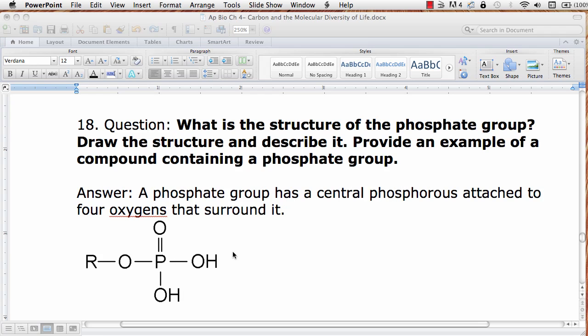What is the structure of the phosphate group? It has a central phosphorus that is attached to four oxygens that surround it.